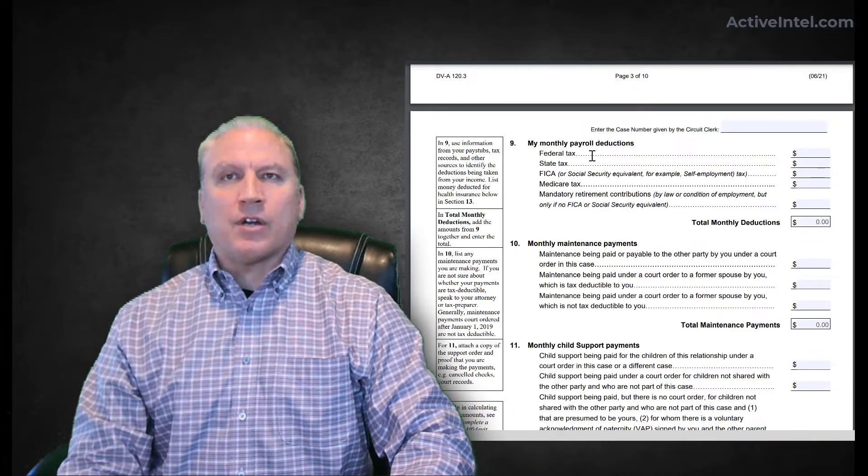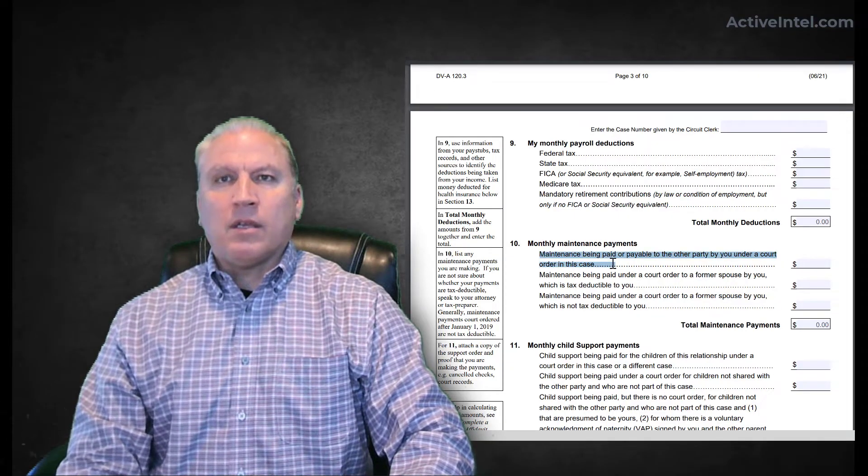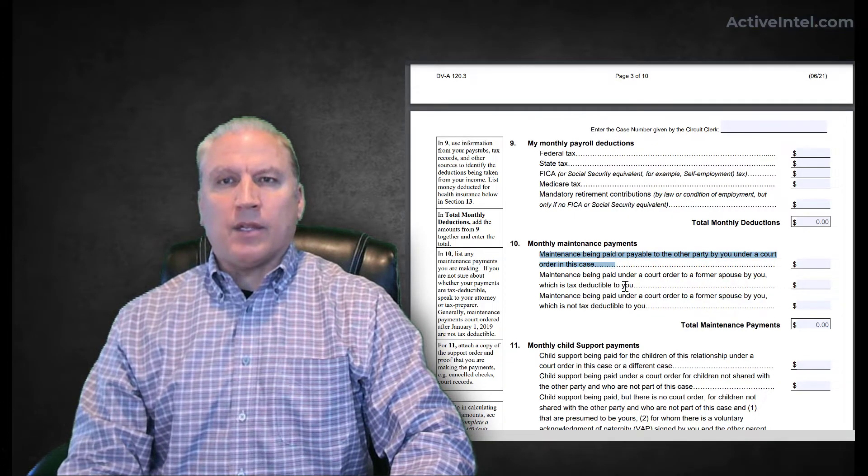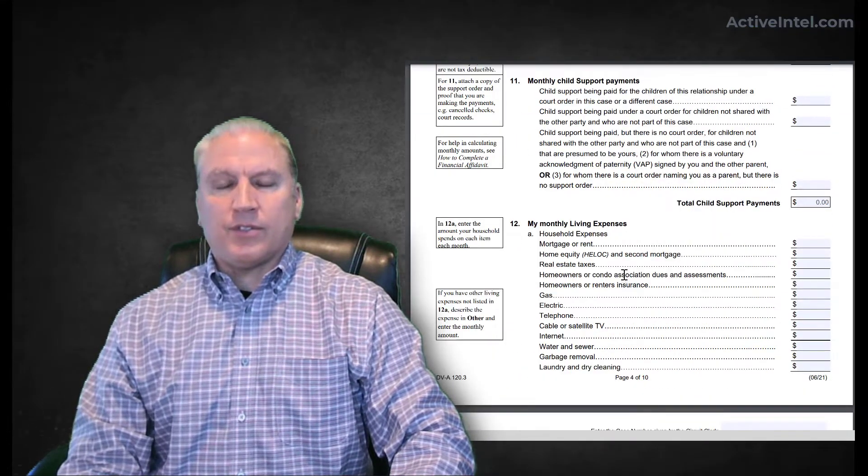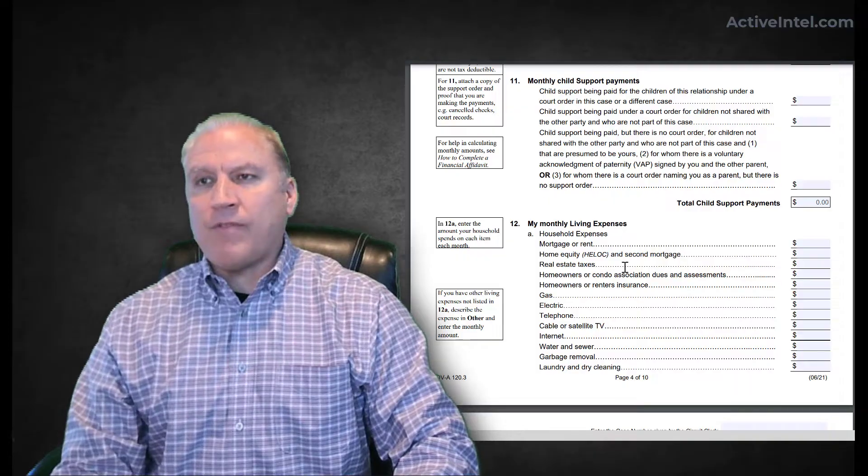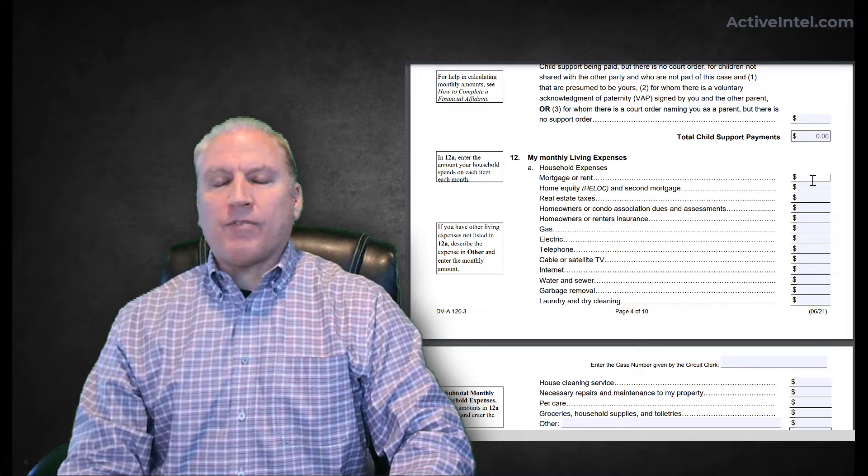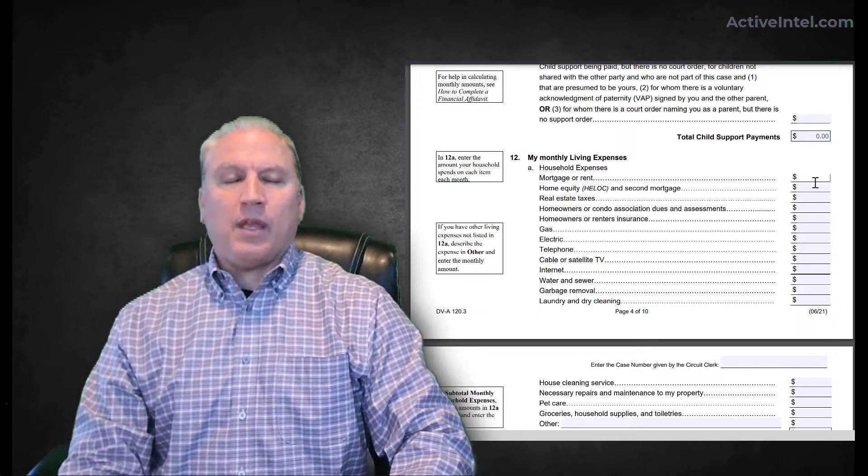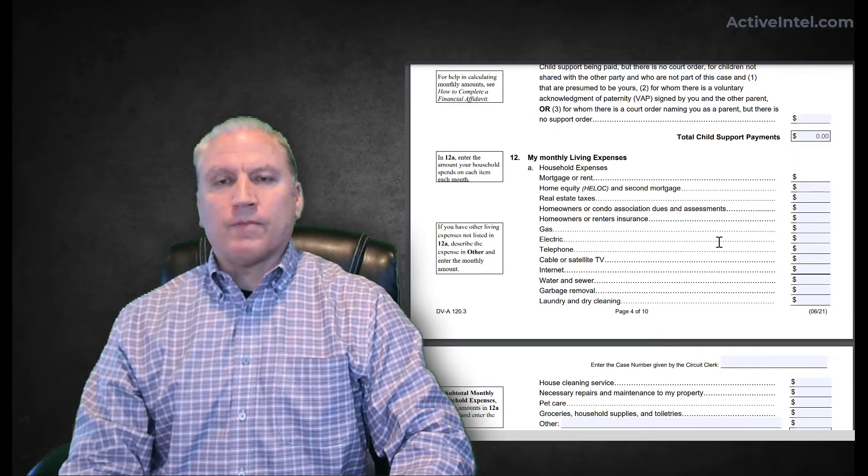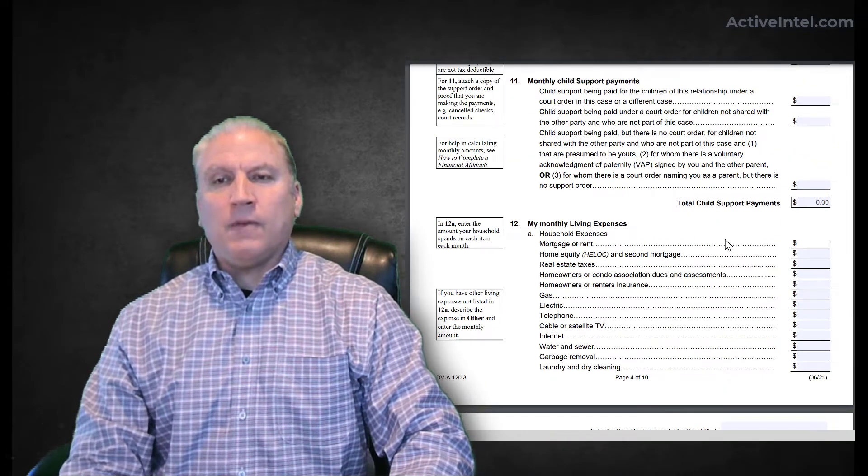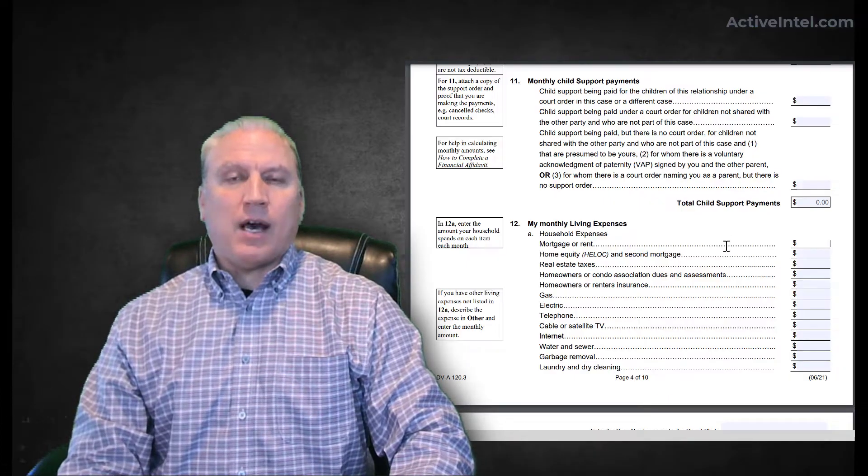What are the deductions? Different taxes, FICA, Medicare. Do you have any currently existing maintenance, child support? And then you have to get into your living expenses. This is where it's a very valuable form. Mortgage or rent—whatever they put down, you want to verify that. If they say they're paying $800 a month rent, you want to get a copy of the lease to make sure that's true. You want to see what name the lease is in, if there's any co-signers or co-residents on that lease.